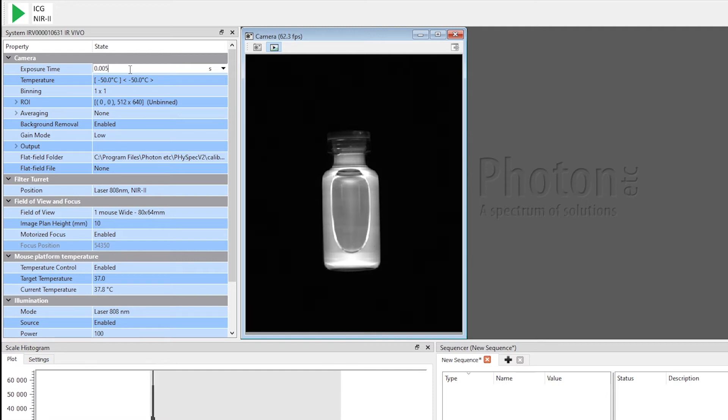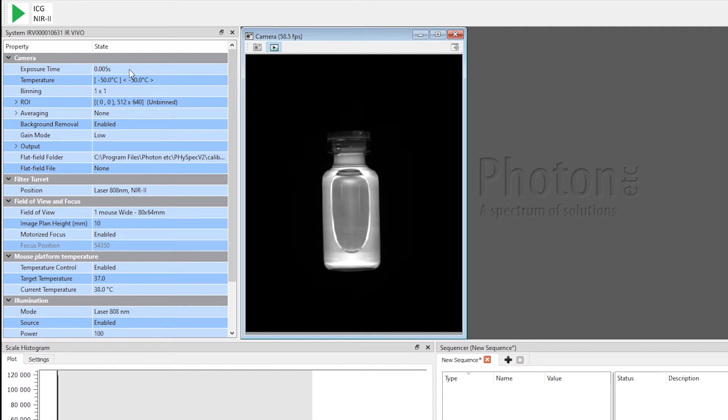To optimize the dynamic range of the camera, I will increase the exposure time to 5 milliseconds. All the parameters are now set for an acquisition. So I will stop the live view, disable the laser, and click on the ICG near-IR button to launch a sequence of operations.